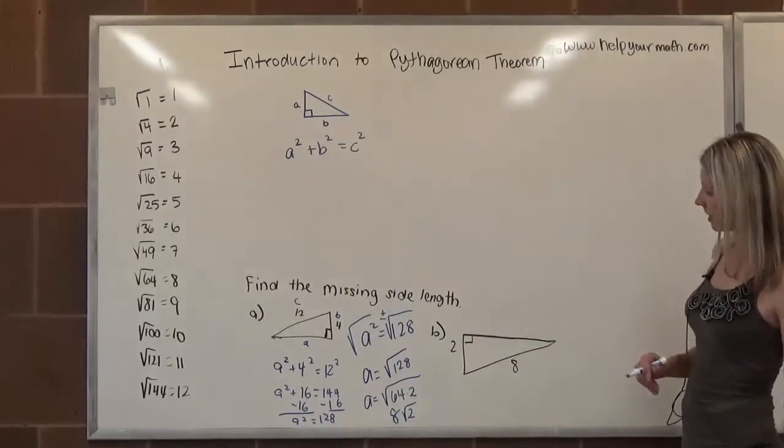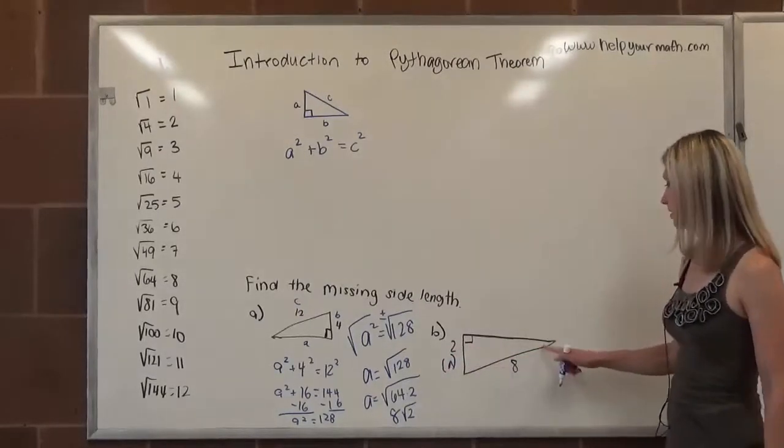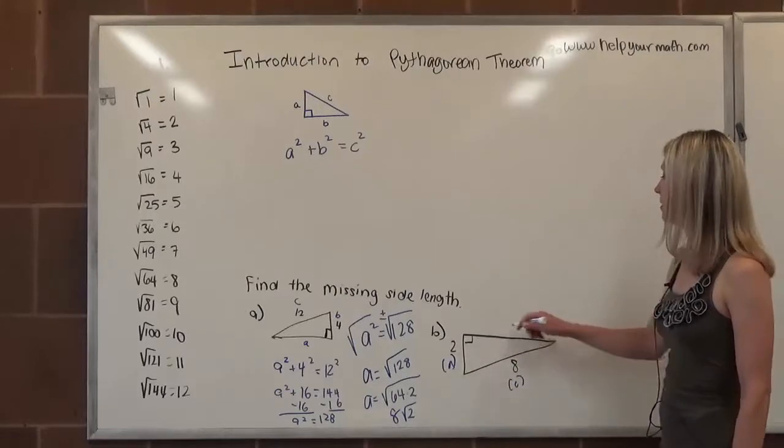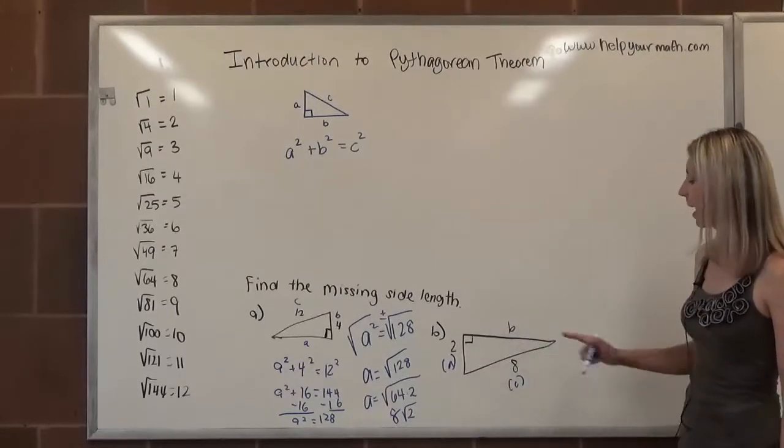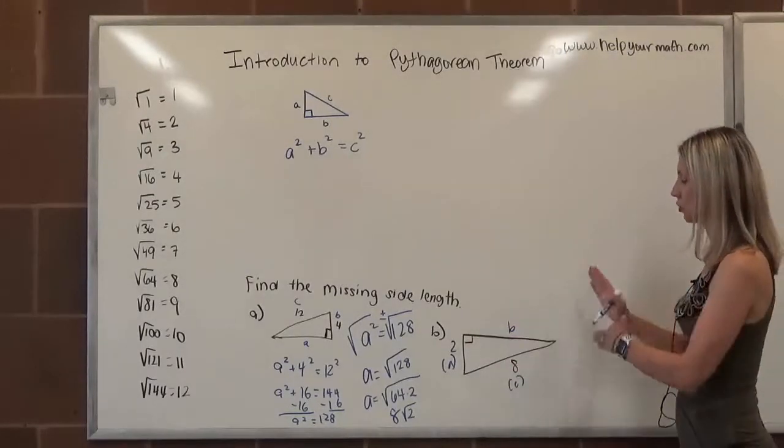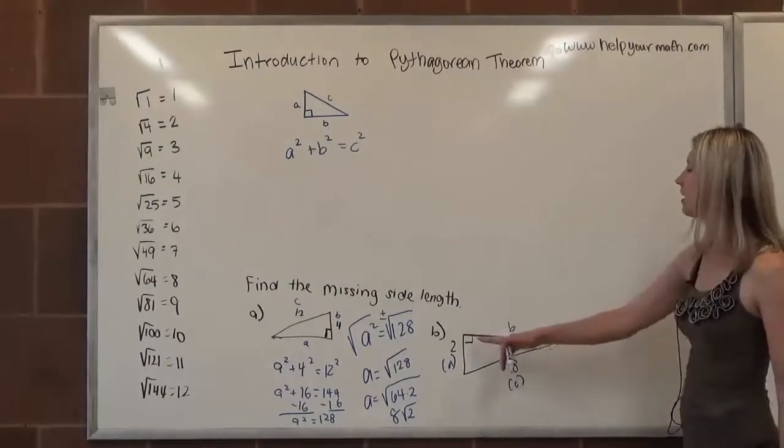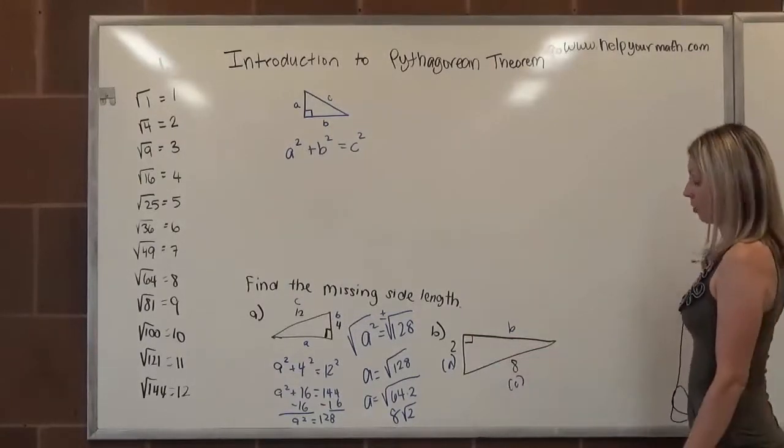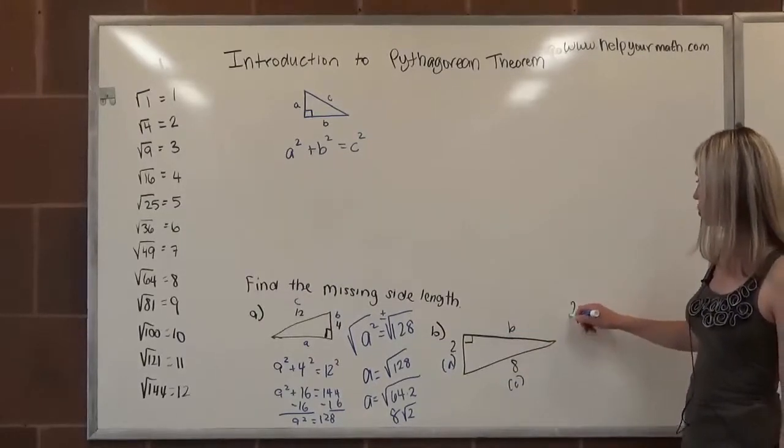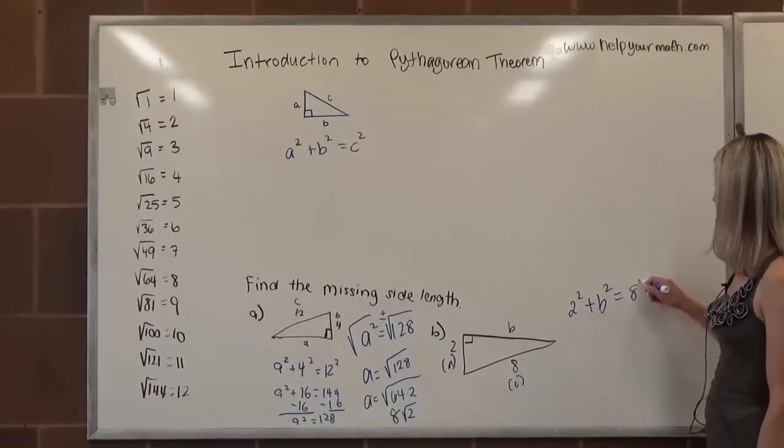In our next example, let's see what we're given. We're given one leg is 2. We're going to call this leg a for fun. This is the hypotenuse, so we're going to call this c. And then this is the other leg. How did I know that this was the hypotenuse? Because it's opposite the right angle. So I changed the direction of my right angle here, or of the triangle. I rotated it a little bit. It's opposite that right angle, so it is the hypotenuse. So again, when we plug in, we're going to say 2 squared plus b squared is equal to 8 squared.